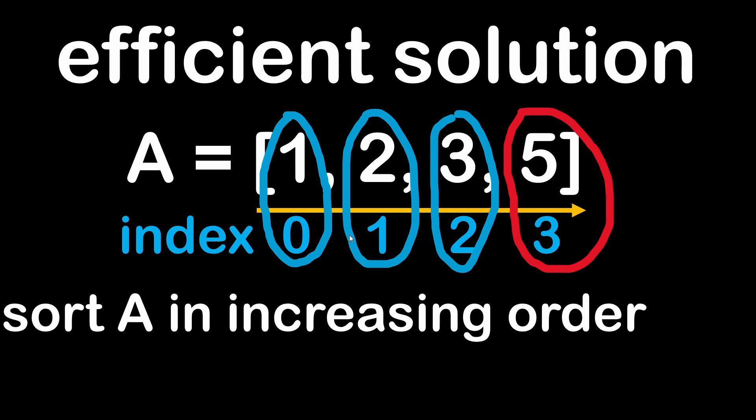Notice that the missing element here is either the last value that verified our relation plus 1, or you can simply take the last index and add 2 to it. So 2 plus 2 will give me 4. And in this case I would have identified my missing element.